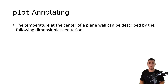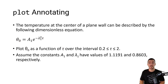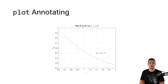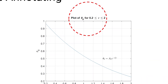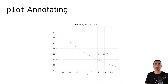The temperature at the center of a plane wall can be described by the following dimensionless equation. Theta naught is equal to a1 times e to the minus lambda 1 squared times tau. We're going to plot theta naught as a function of tau over the interval 0.2 ≤ tau ≤ 2. The constants a1 and lambda 1 have values of 1.11 and 0.8603 respectively. The main purpose of this video is to show you how to use TeX markup to add special characters like Greek letters and mathematical symbols to the text in a plot. I'll also show you how to use LaTeX markup for more advanced formatting options. Let's head over to MATLAB and get started.